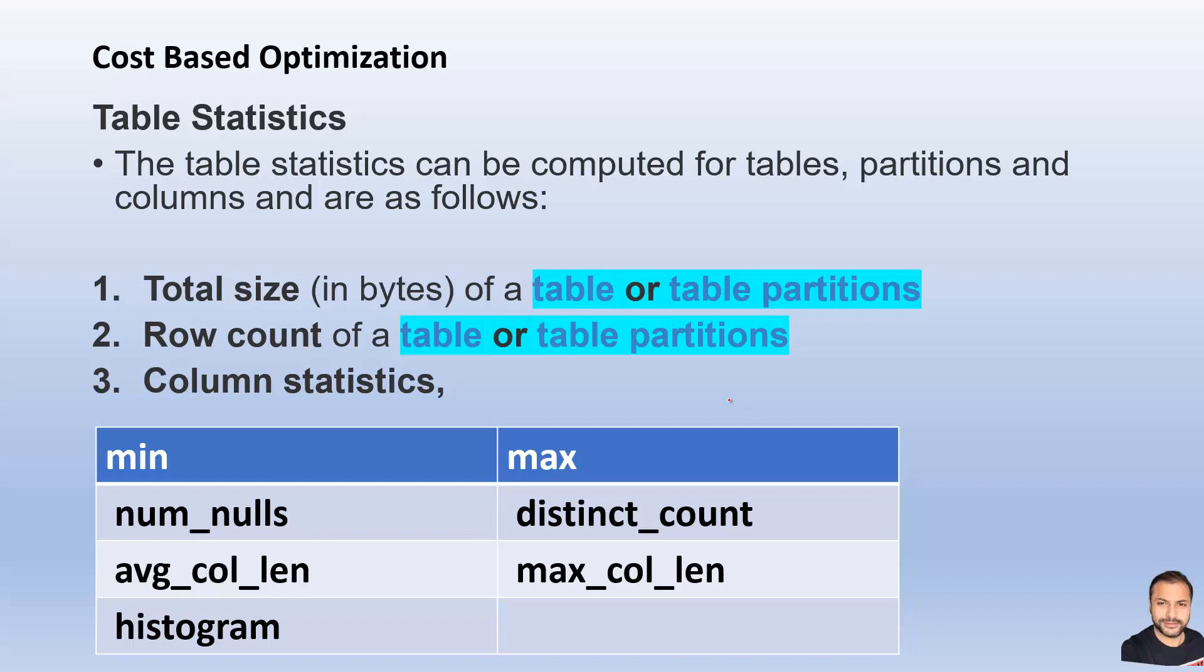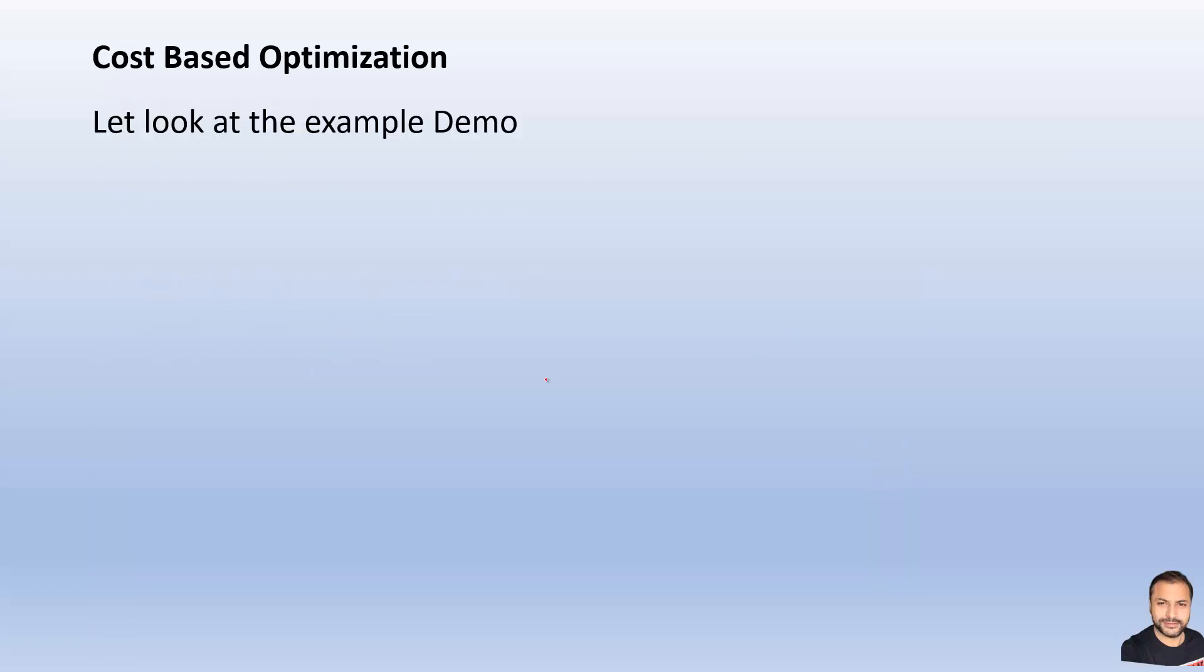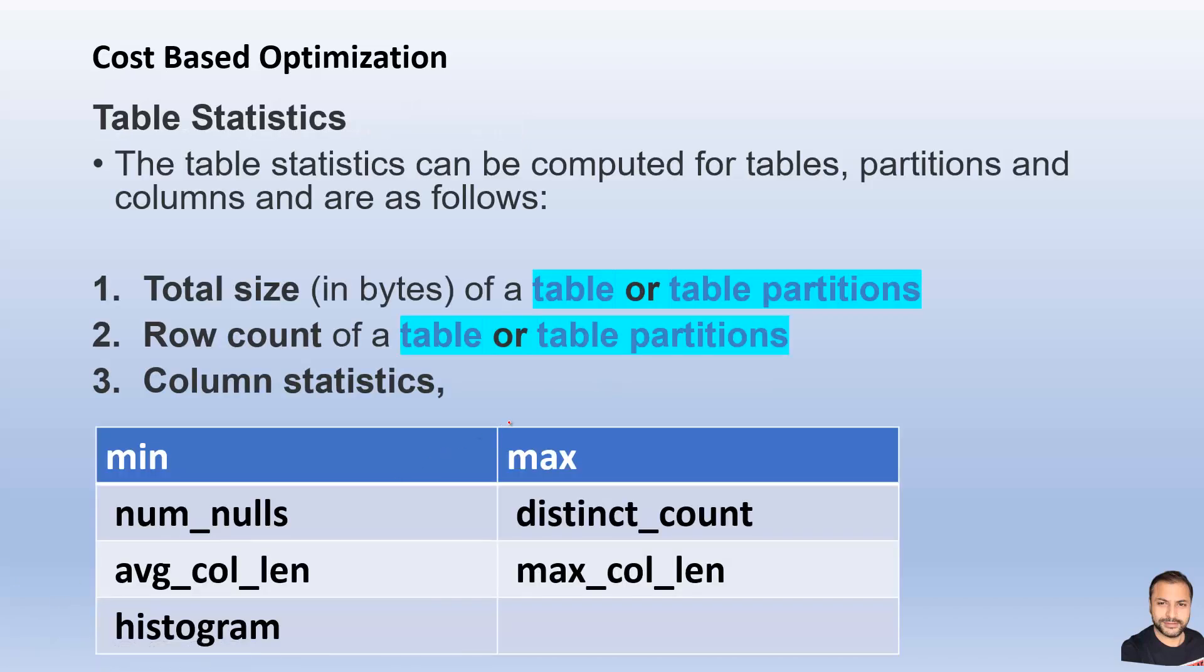The table statistics are calculated towards the total size for a given table or table partition, the number of rows involved in that particular SQL execution, and then a lot of column data related statistics, things like what is the min value and the max value for that column, number of nulls, distinct counts, average column length, max column length, and also works on the histograms.